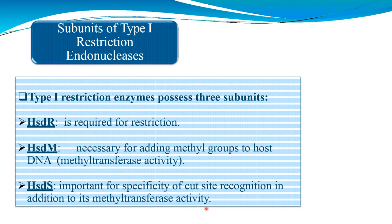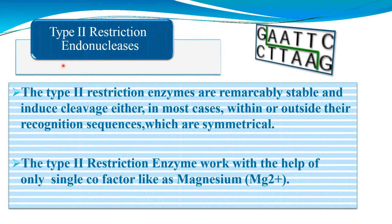Type 2 restriction enzymes are remarkably stable and induce cleavage either within or outside their recognition sequence, which is symmetrical. Type 2 restriction enzymes work with the help of a single cofactor — magnesium.